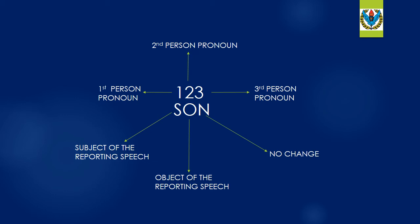These represent three kinds of pronoun: first person pronoun, second person pronoun, and third person pronoun. S and O represent the subject and object of the reporting speech respectively. N stands for no change. So first person pronoun changes with the subject of the reporting speech. Second person pronoun changes with the object of the reporting speech. Third person pronoun will not change.